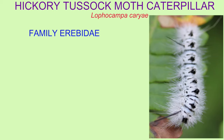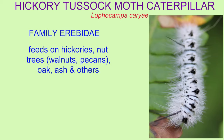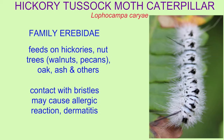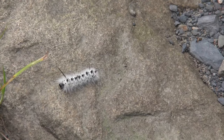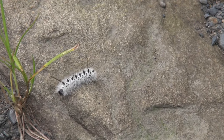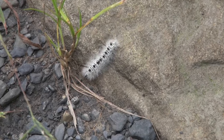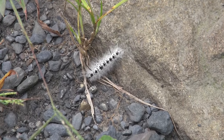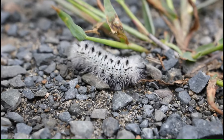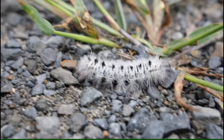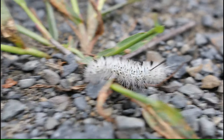The hickory tussock moth caterpillar is the larval form of a moth in the family Erebidae. It feeds on hickory trees primarily, but also commonly nut trees such as walnuts and pecans, and other trees such as oaks, ash, and others.